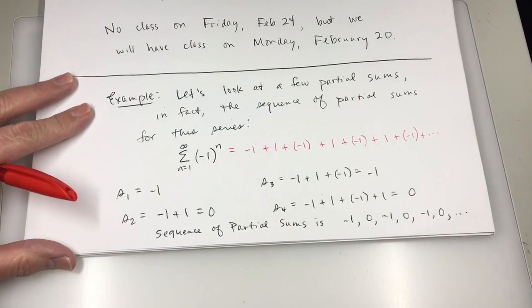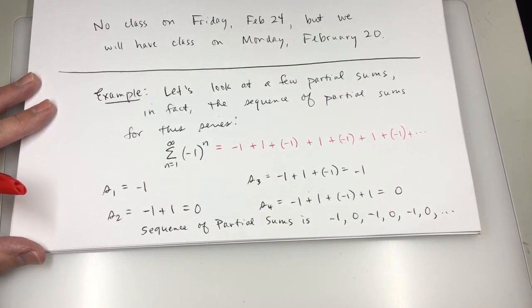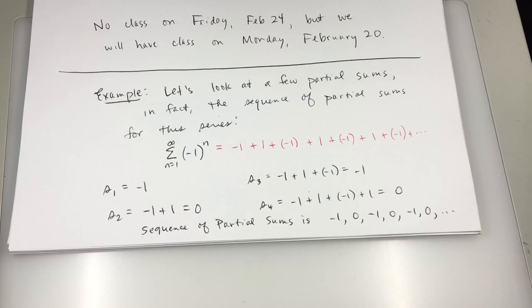And does the sequence of partial sums converge or diverge? It diverges. It would converge if it approaches one particular number. So this diverges.